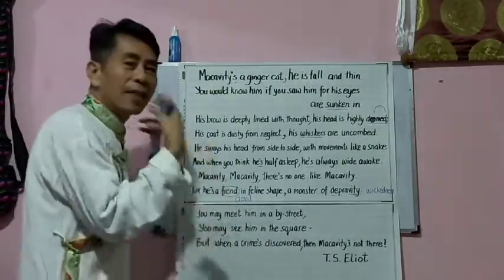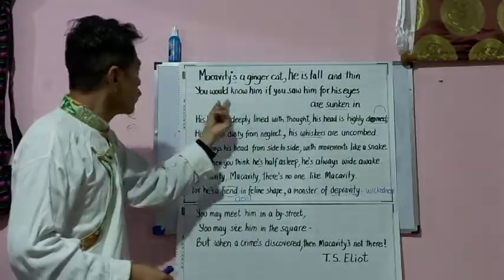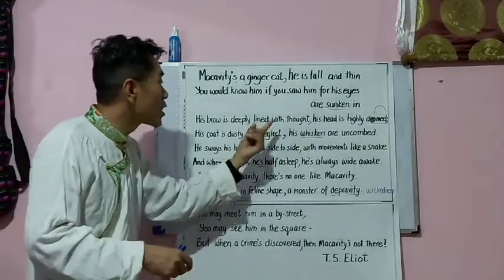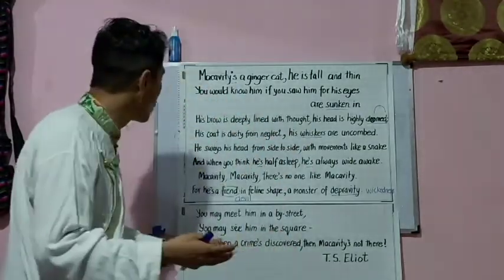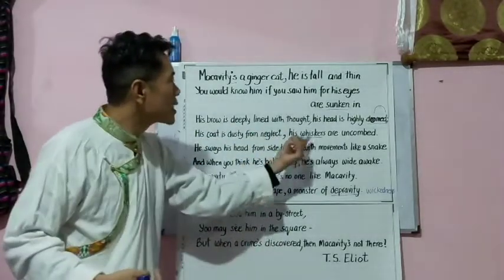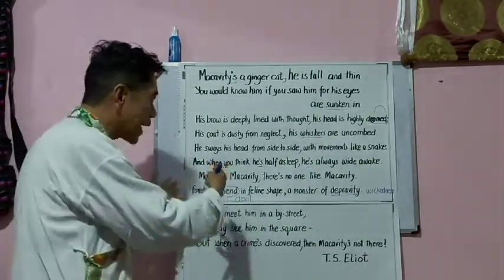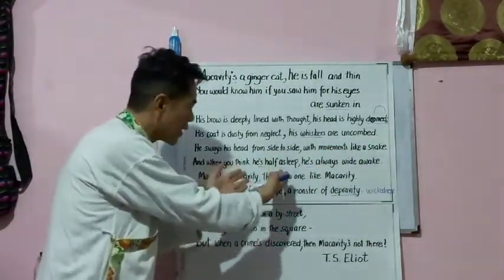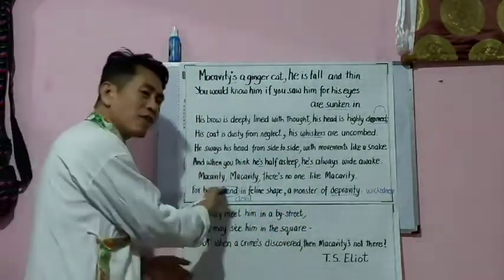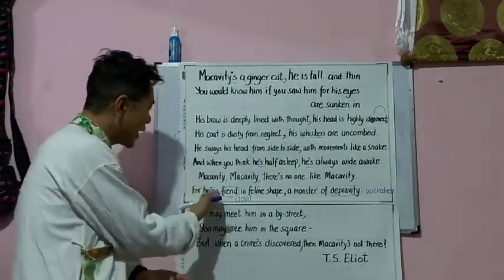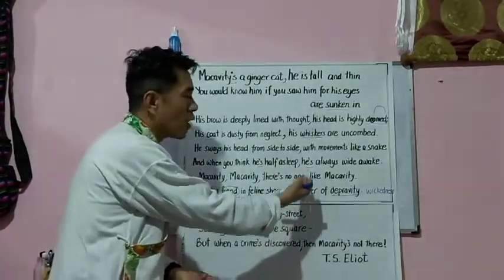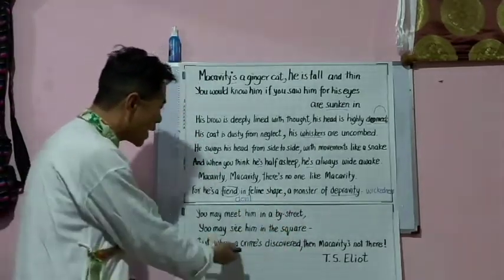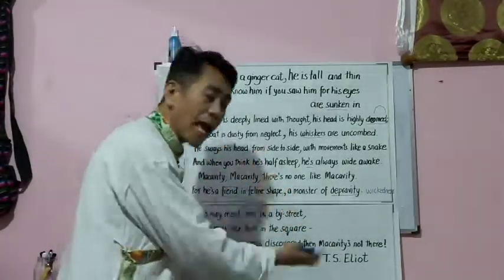Macavity is a ginger cat. He is tall and thin. You would know him if you saw him, for his eyes are sunken in. His brow is deeply lined with thought. His head is highly domed. His coat is dusty from neglect. His whiskers are uncombed. He sways his head from side to side with movements like a snake. And when you think he is half-asleep, he is always wide awake. Macavity, Macavity, there is no one like Macavity. For he is famed in feline shape, a monster of depravity. You may meet him in a by-street. You may see him in the square. But when the crime is discovered, then Macavity is not there.